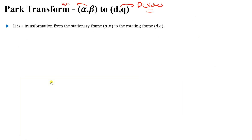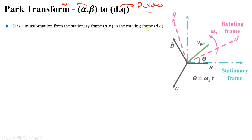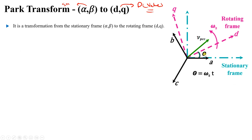Let's look at these frames. We will have a DQ frame — this frame will be changing with time. It will not always be at this point; D will be here at some time, here at another time. So it is a rotating frame — it rotates with our vector, making the two components constant with time.